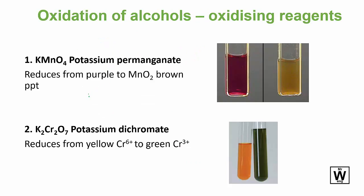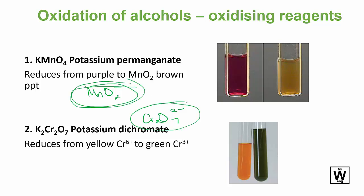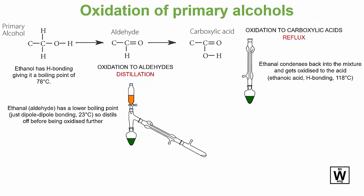You don't need to memorize the conditions — they're straight from the data booklet. But you will need to know the color changes: it goes from red or purple to brown, and from yellow to green. These are the color changes as the oxidizing agents get reduced. As you can see, their oxidation numbers are decreasing because they are acting as oxidizing agents.